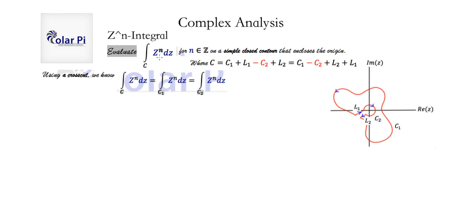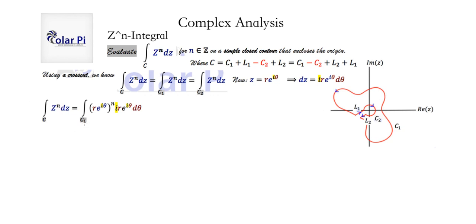When n is less than or equal to negative 1, the origin is a singular point of z to the n. So we do exactly what we did in the last video in all those situations — we use this idea of a cross cut. Because the integral over C1 is the same as the integral over C2, where C2 is this small circle centered at the origin, we define a circle centered at the origin as z equal to re to the i theta, which means dz looks like this. So z to the n over C equals z to the n over C1 equals z to the n over C2, and this is just substitution.